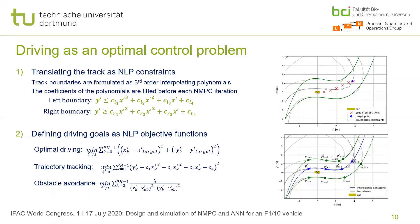As far as the driving goals, we can either have optimal driving, trajectory tracking, or a combination — including obstacle avoidance, for example a static obstacle on the track or a competing car. These cost functions can be combined with each other.